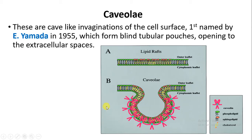These are structures able to perform endocytosis, and this is how molecules from outside the cell can enter inside the cell. So we can say caveolae have a role in endocytosis.